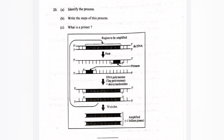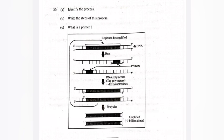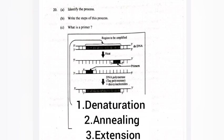Answer: A - Polymerase chain reaction or PCR. B - 1) Denaturation, 2) Annealing, 3) Extension.